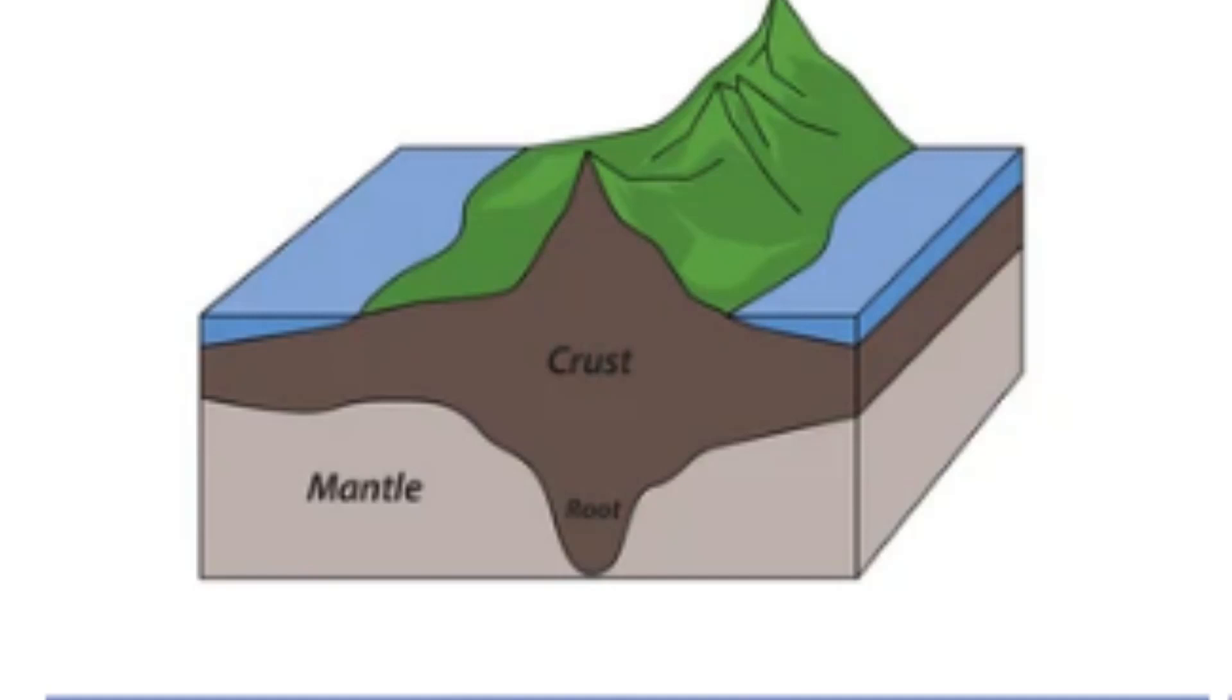Isostasy plays an important role in geology and other Earth sciences. It can be used to explain the elevation of land masses, the formation of mountain ranges, and the movement of tectonic plates. Isostatic adjustments also affect sea level, as changes in the distribution of mass on the Earth's surface can cause the crust to rise or fall in different regions.